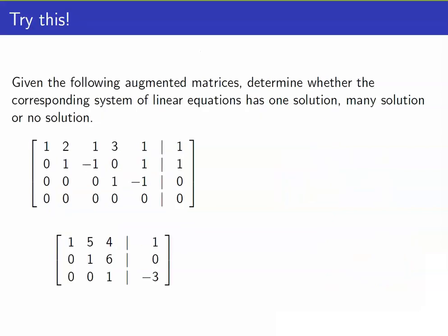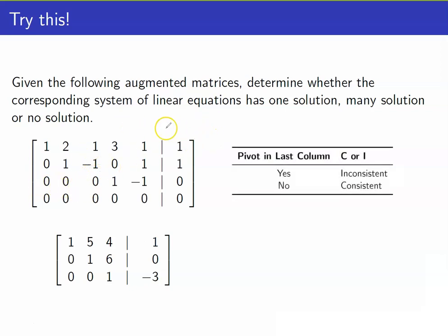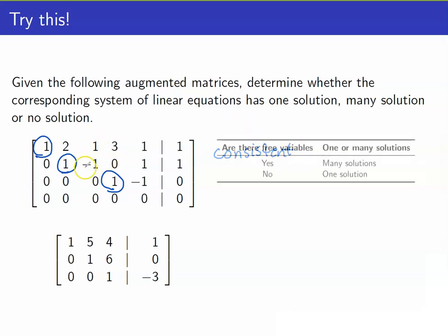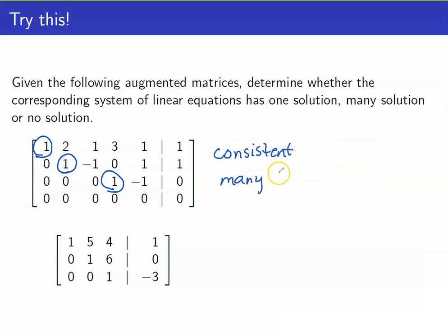Given the following augmented matrices, we want to determine whether each has one solution, many solutions, or no solution. For the first matrix: looking at the leading coefficients, there is no pivot in the last column, so it is consistent. However, we have free variables in the third and fifth columns. Therefore, this system has many solutions.